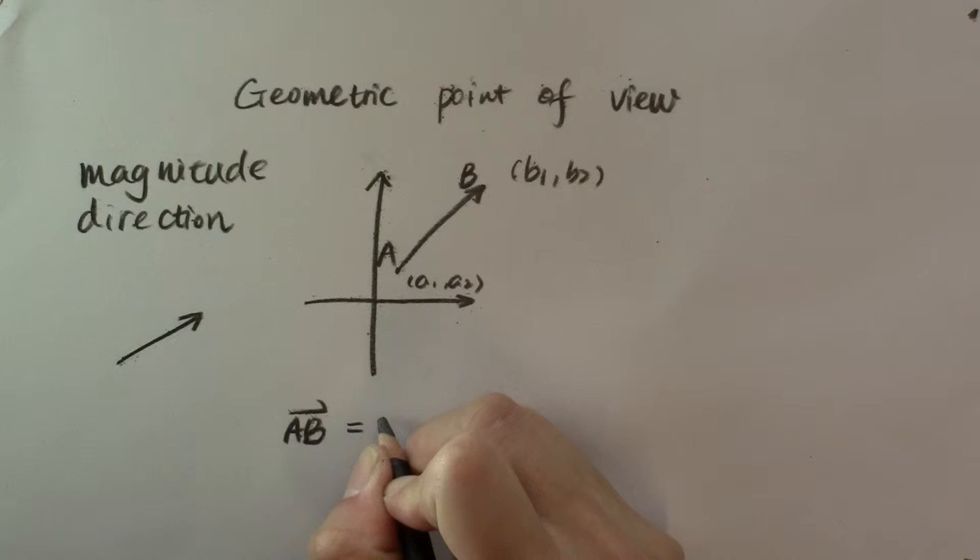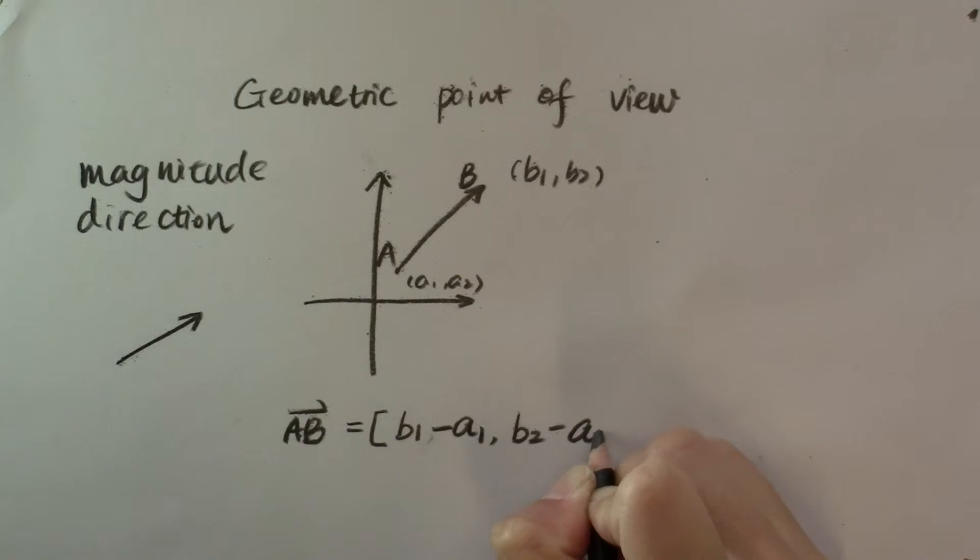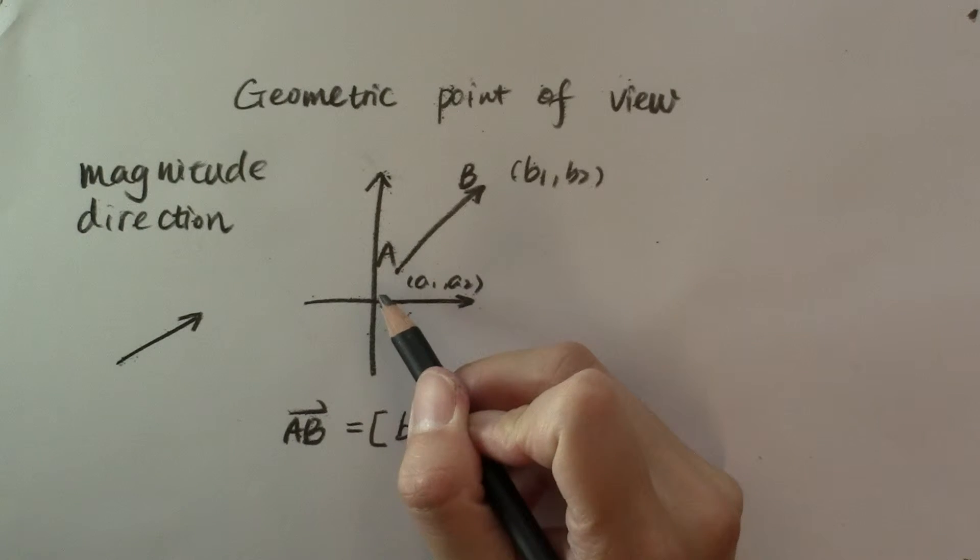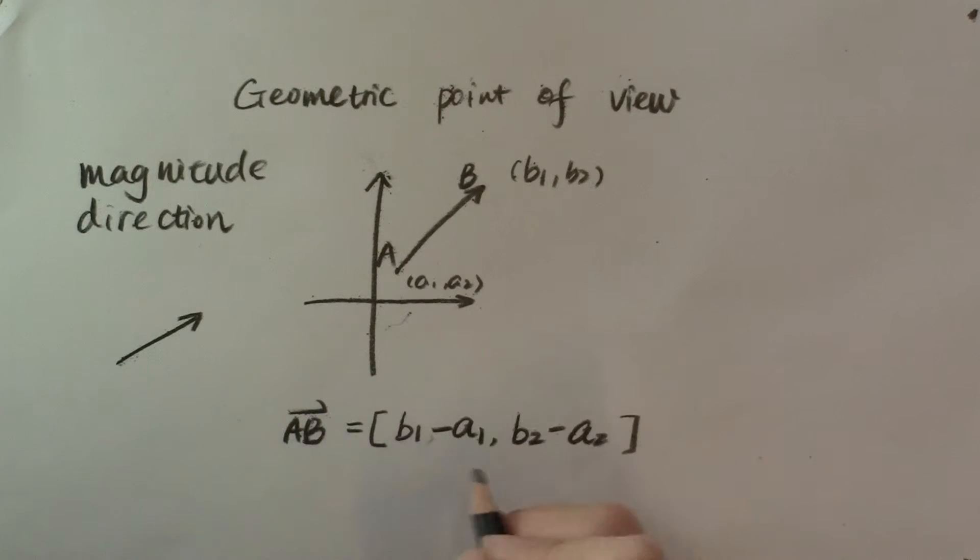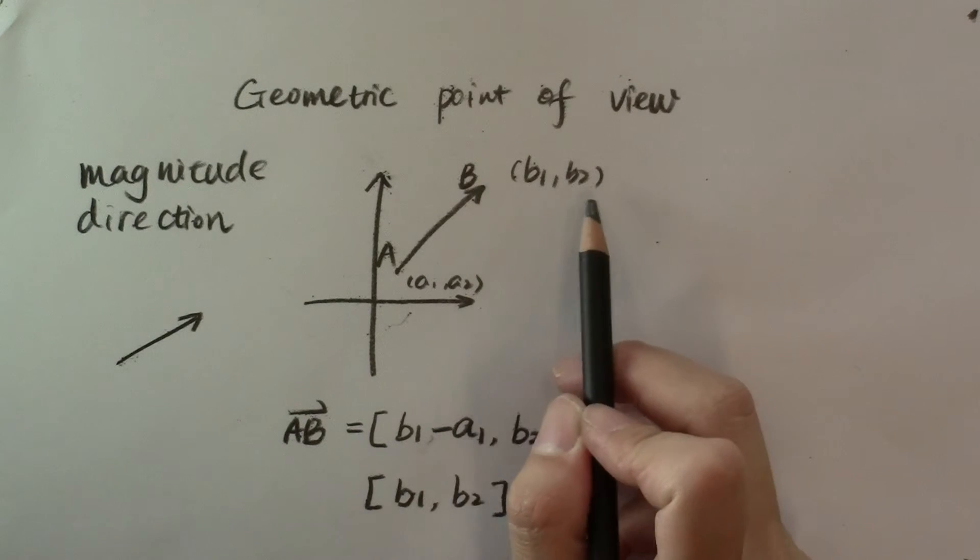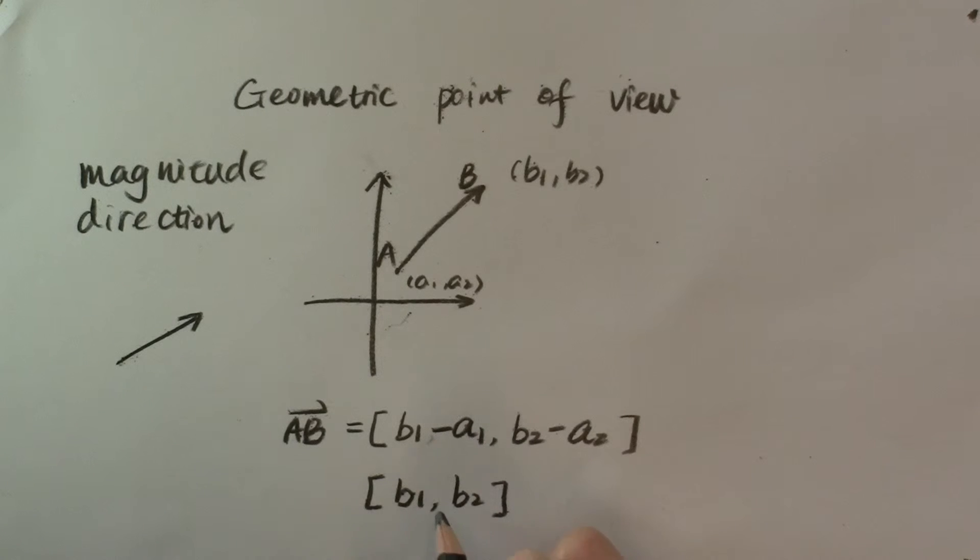Vector ab is equal to b sub 1 minus a sub 1, b sub 2 minus a sub 2. If point a is located at the origin, then this vector becomes b sub 1, b sub 2, which looks just like the coordinates, except the parentheses are replaced with square brackets.